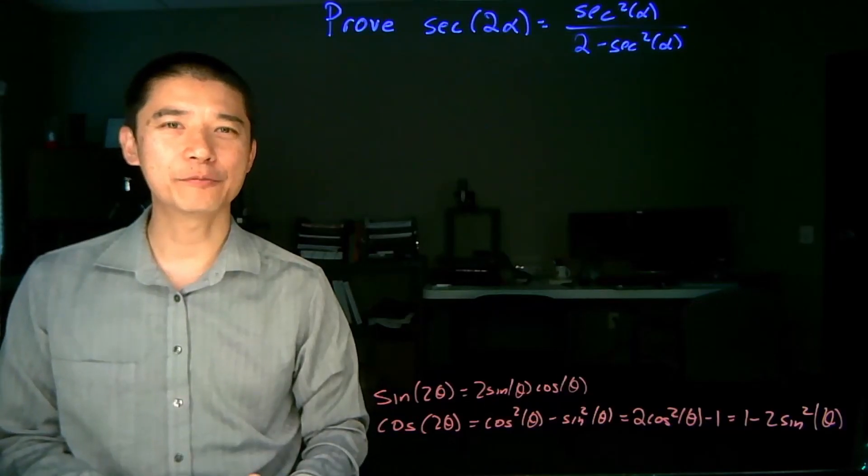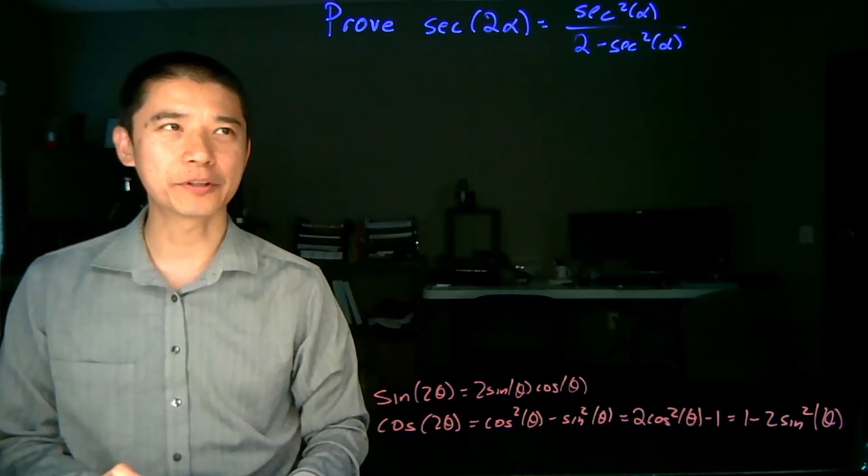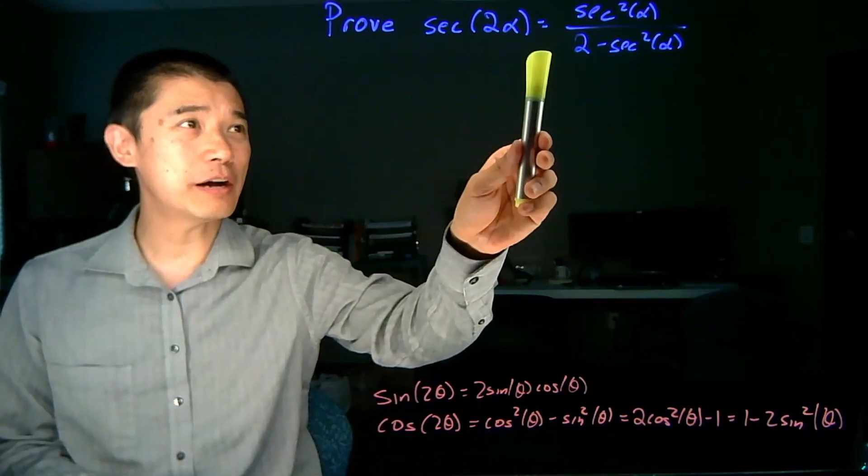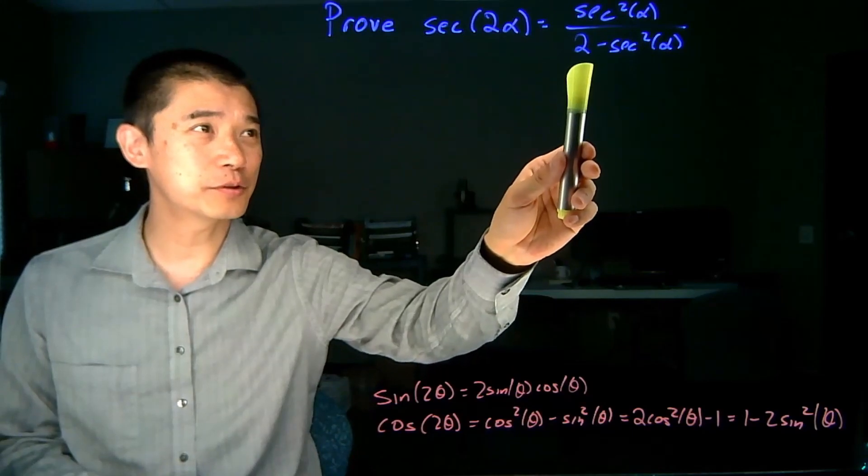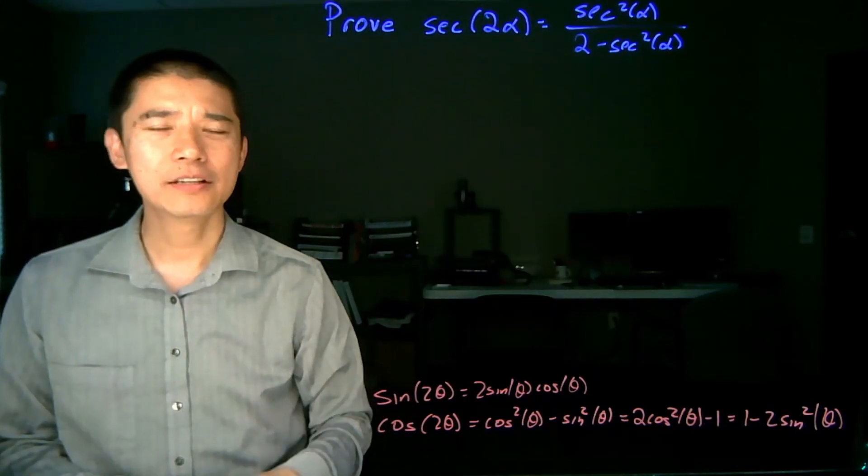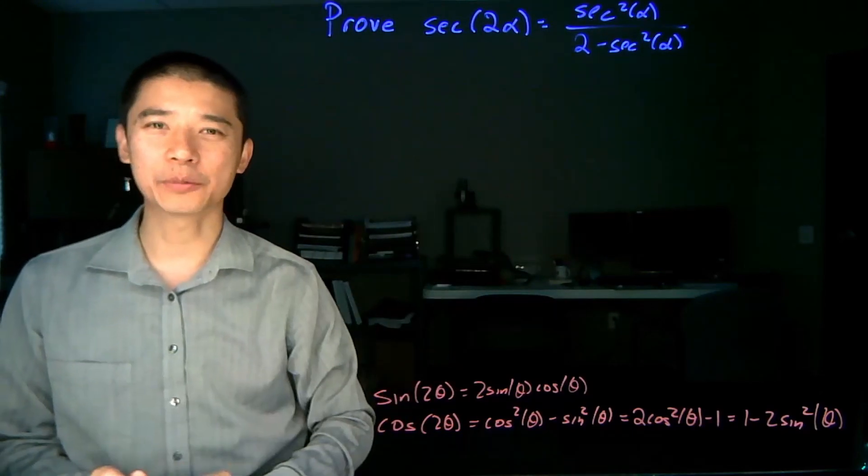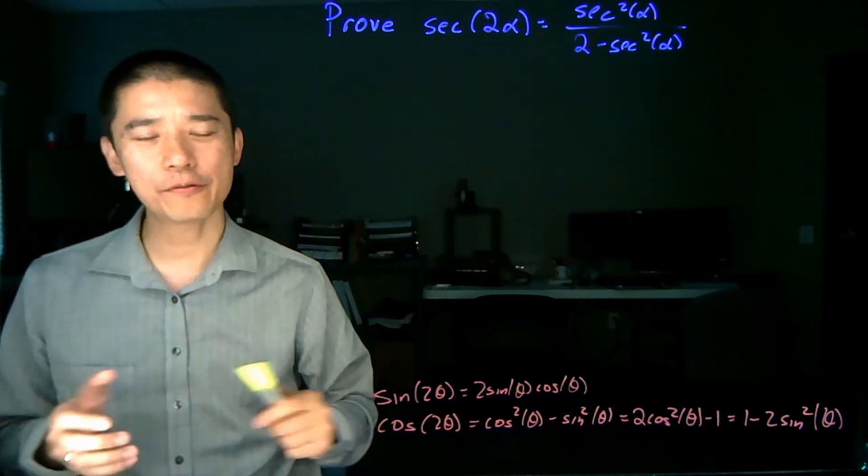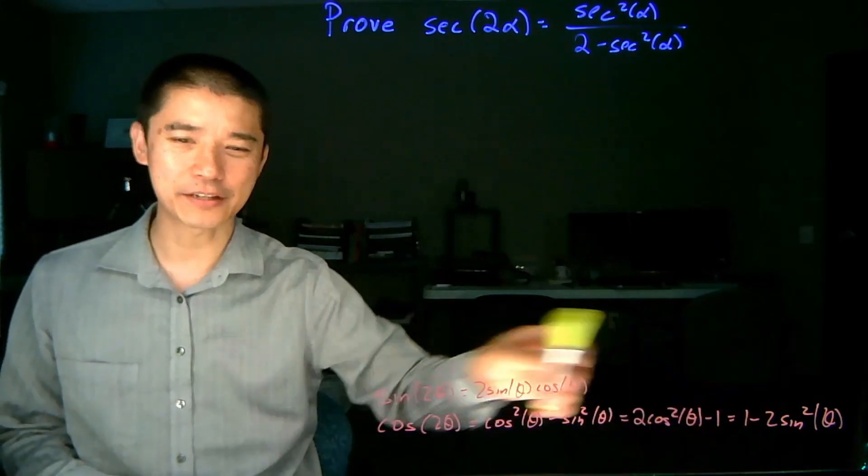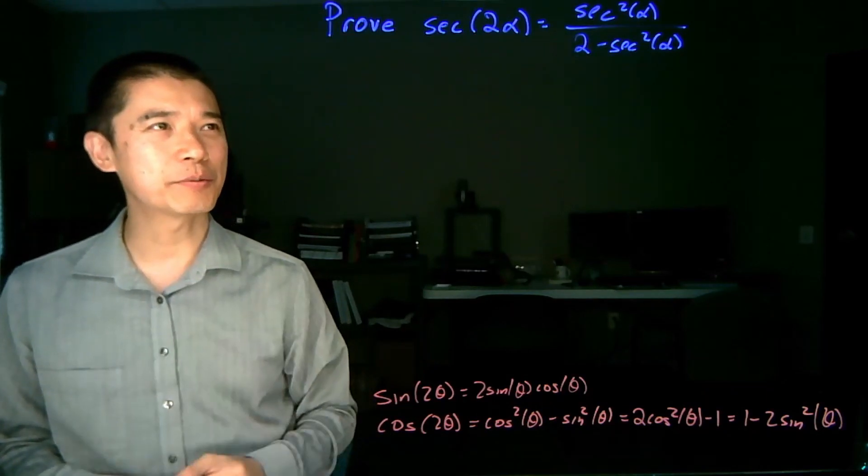And now we'll do an example of proving an identity using the double angle formulas. Prove that secant of 2 alpha is equal to secant squared alpha over 2 minus secant squared alpha. Now, if you notice, this is actually a double angle formula for the secant function. All the functions have double angle formulas, and they're just going to be applications of these down here.